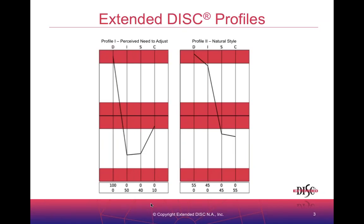Here we have the two famous Extended DISC profiles. With the new platform, you don't have to include the profiles in the reports. If you only have 90 minutes to spend with a group, you probably don't want to jump into profiles. A lot of our clients only focus on identifying somebody's style, maybe in terms of 55% D and 45% I. Don't feel that profiles always must be included in the report — participants don't know what's supposed to be there. You can also include only profile two or only profile one, but together they provide more information about who the person is.